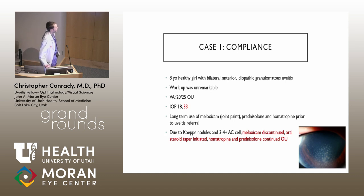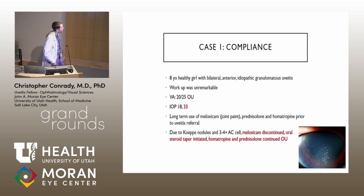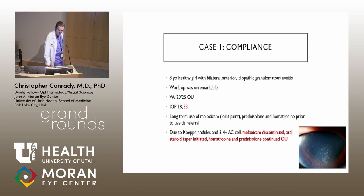The first case is an eight-year-old healthy girl with bilateral idiopathic anterior granulomatous uveitis. Workup was unremarkable. Visual acuity was 20/25 when we first started seeing her. Pressure was 18 in the right, 33 in the left. She had been on long-term meloxicam for joint pain, prednisolone drops, and homatropine for quite a while before she was even referred to our uveitis clinic. When we saw her in clinic, she had KP nodules and three-to-four-plus AC cell. We quickly discontinued the meloxicam and started an oral steroid taper to quell her inflammation.